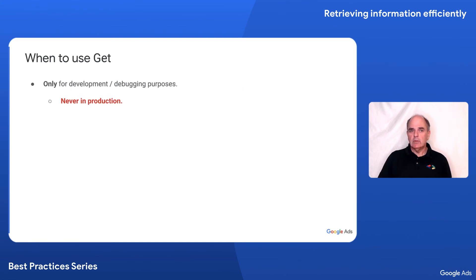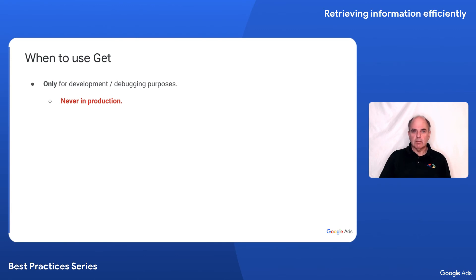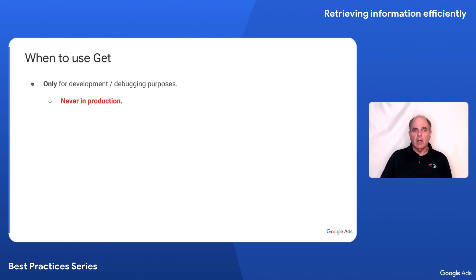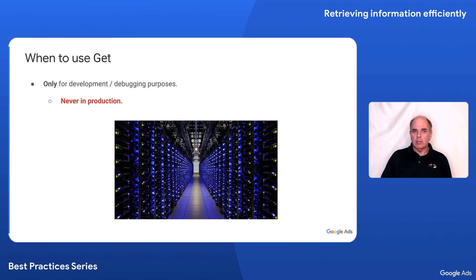Let's talk about when to use GET. GET is specific to one service. It retrieves all the properties and all the metrics of a given entity. It is a very expensive operation, as some entities have dozens of properties and metrics. Because it is expensive, a given developer is limited to only 1,000 GET requests per day across all accounts. GET should only be used for development and debugging purposes. It should never be used in production.